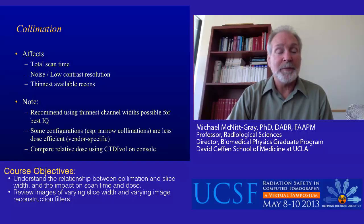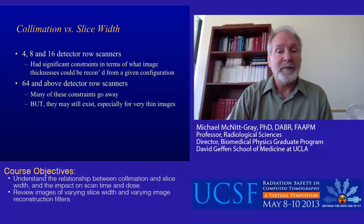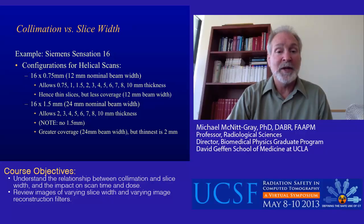When you look at collimation versus slice width, the 4, 8, and 16 row scanners had significant constraints in terms of what image thicknesses could be reconstructed from a given configuration. 64 and above detector row scanners remove many of these constraints, but they may still exist, especially for very thin images. For example, the Siemens Sensation 16 in 16 by 0.75 mode — a 12 millimeter nominal beam width — allowed very thin slices: 0.75, 1, 1.5, 2, 3, 4, 5, 6, 7, 8, and 10 millimeter thicknesses, but had less coverage.